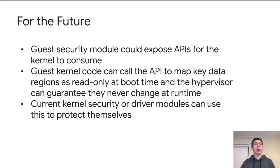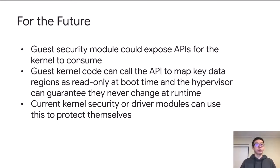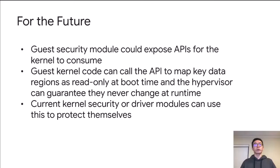For the future, once we have the protection in place, we can extend this guest security module to expose APIs for any kernel code to consume — it can be a driver or security-hardening code inside the kernel. They can call the API during boot, allocate memory, write to it, and then mark it as read-only. We will send this memory segment to the hypervisor at the end of boot, and then ensure that memory never changes during the entire lifetime of the VM. All kernel security and driver modules can take advantage of this to protect themselves.